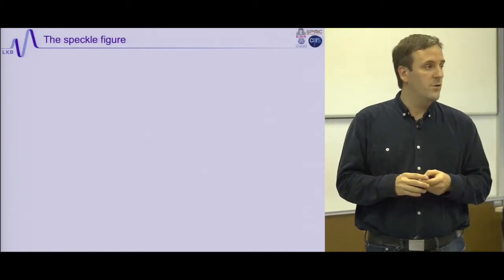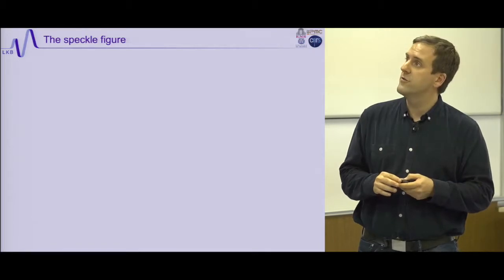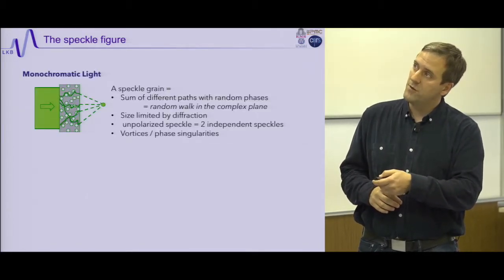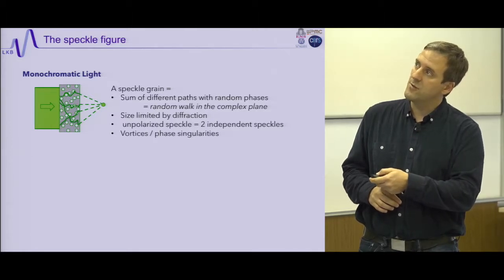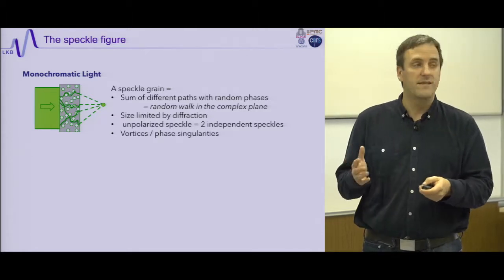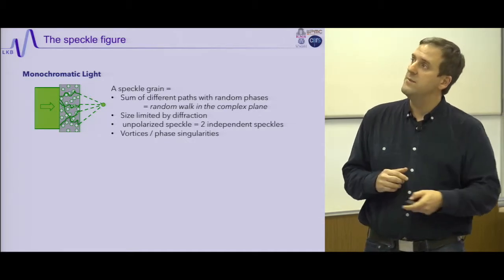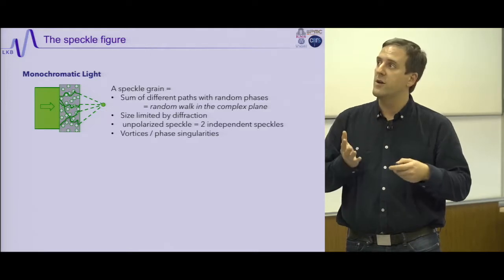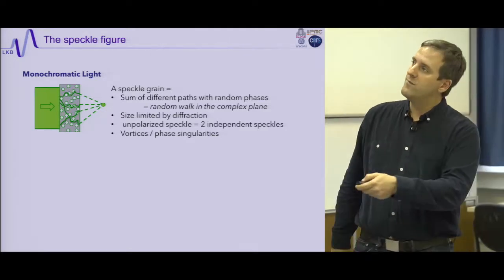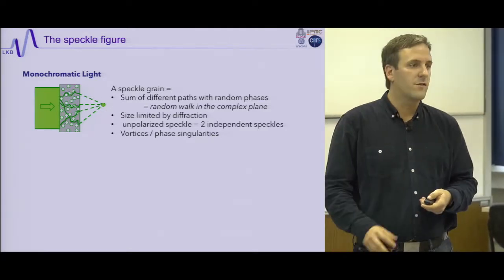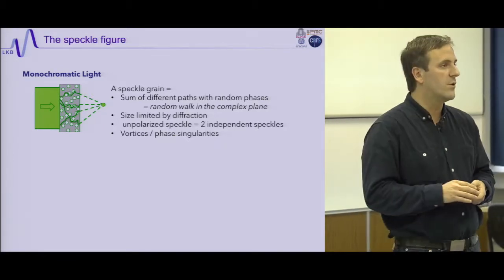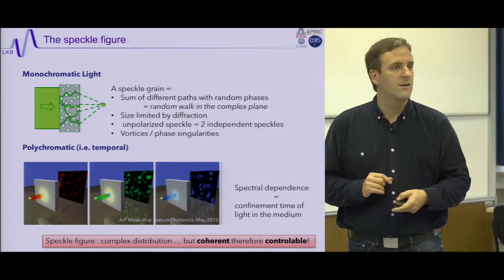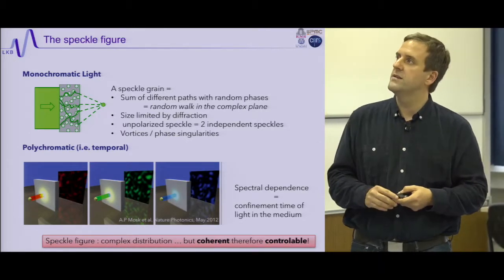Summary so far: the speckle pattern observed through a scattering medium with monochromatic light consists of many grains. Each speckle grain is a sum of many paths with random phases. The size is limited by diffraction. Unpolarized speckle gives two orthogonal independent speckle patterns. There are also interesting phenomena such as vortices and singularities, and interesting spectral behavior, which I will not discuss today.